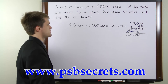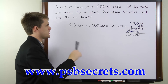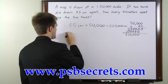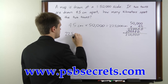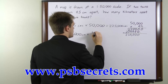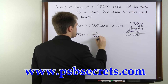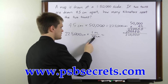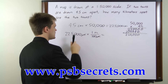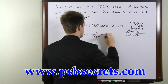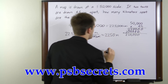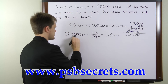But we're asked how many kilometers this is, so we need to convert our centimeters into kilometers. We'll do this one step at a time: 225,000 centimeters times 1 meter per 100 centimeters. Dividing by 100, we move our decimal point two places to the left, which gives us 2,250 meters.